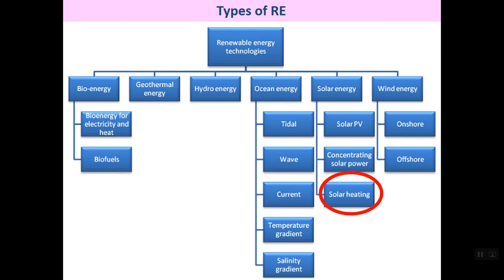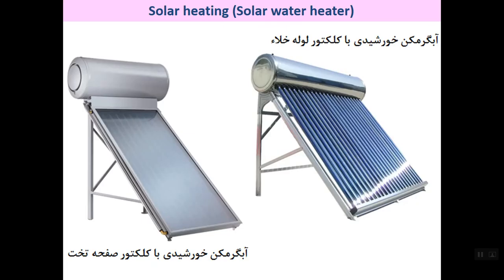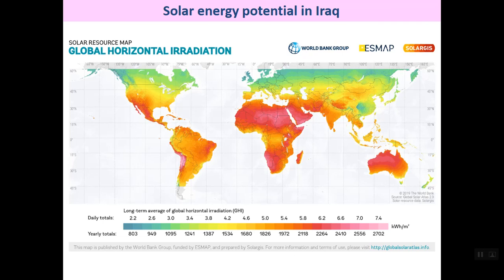The next application for solar energy is heating. Generally, the medium heated is water, though air heating is also possible. Water heating is the main application for solar energy in heating. Solar water heaters are used for domestic water heating, space heating, or other applications such as dryers or even cooling.